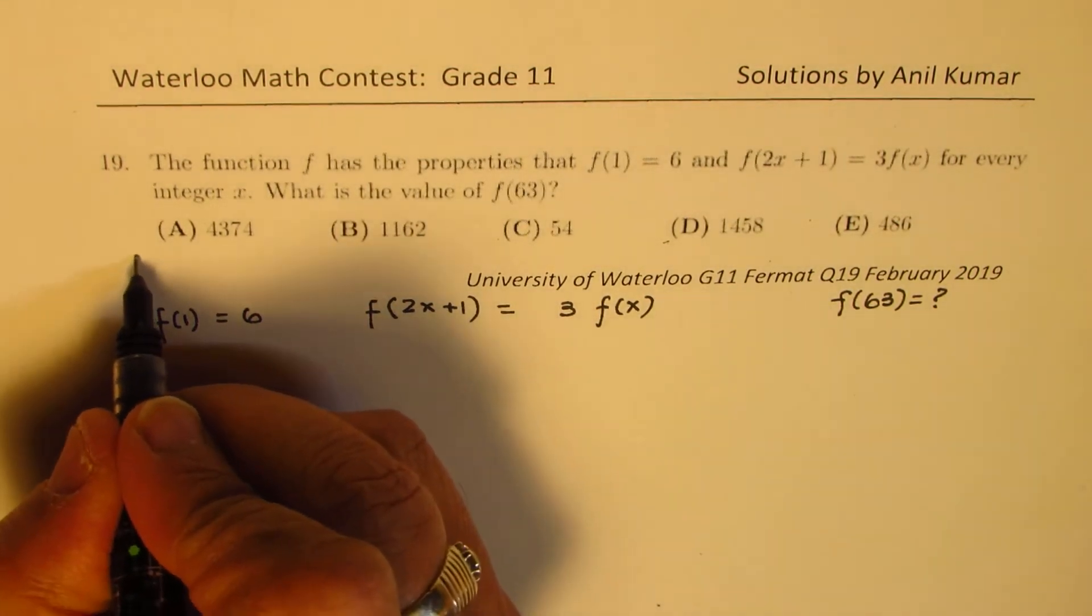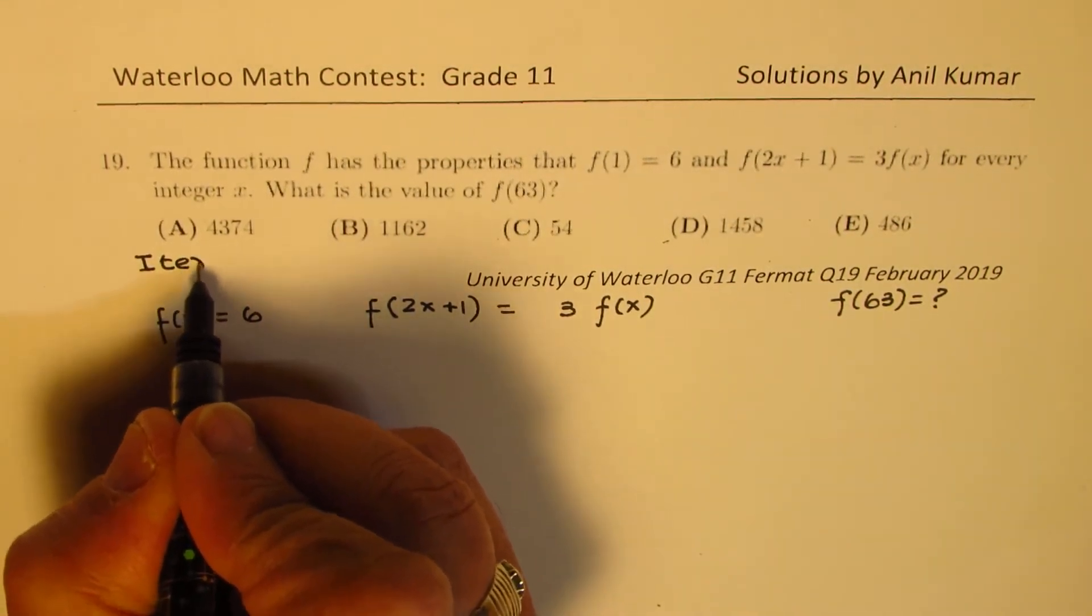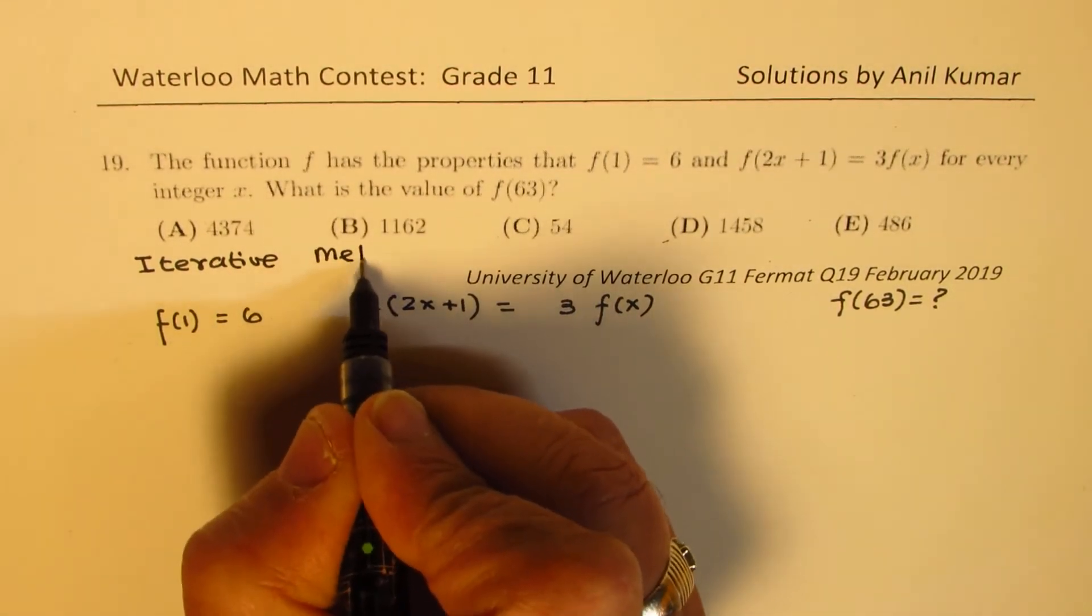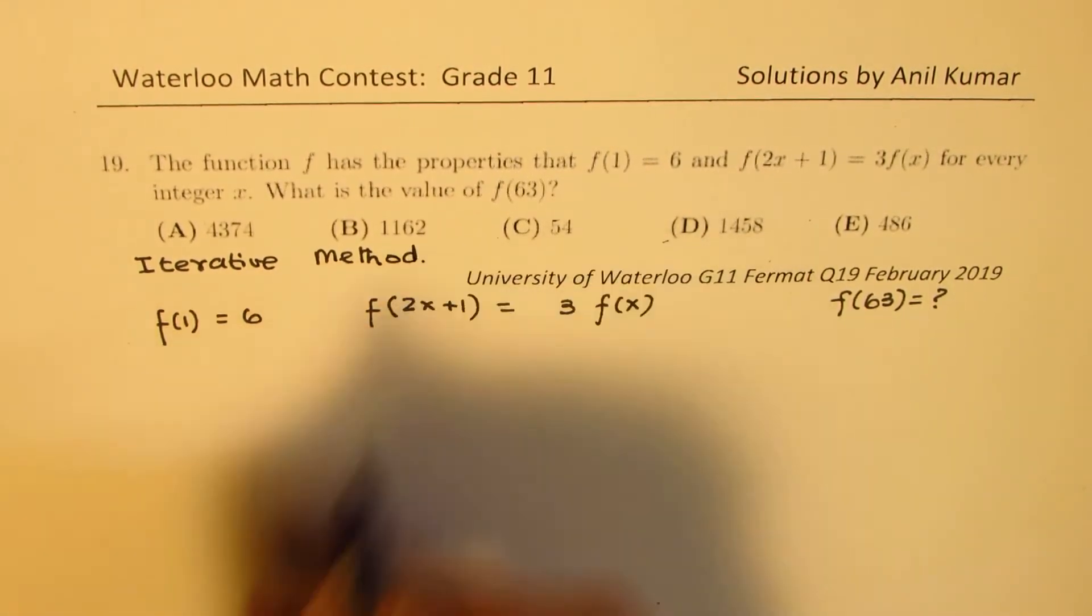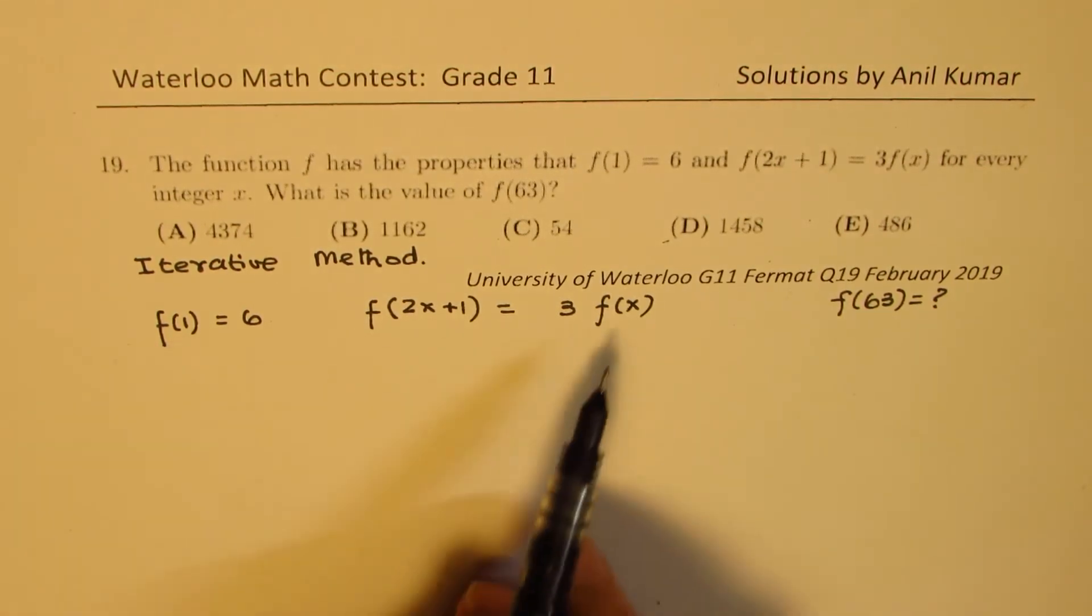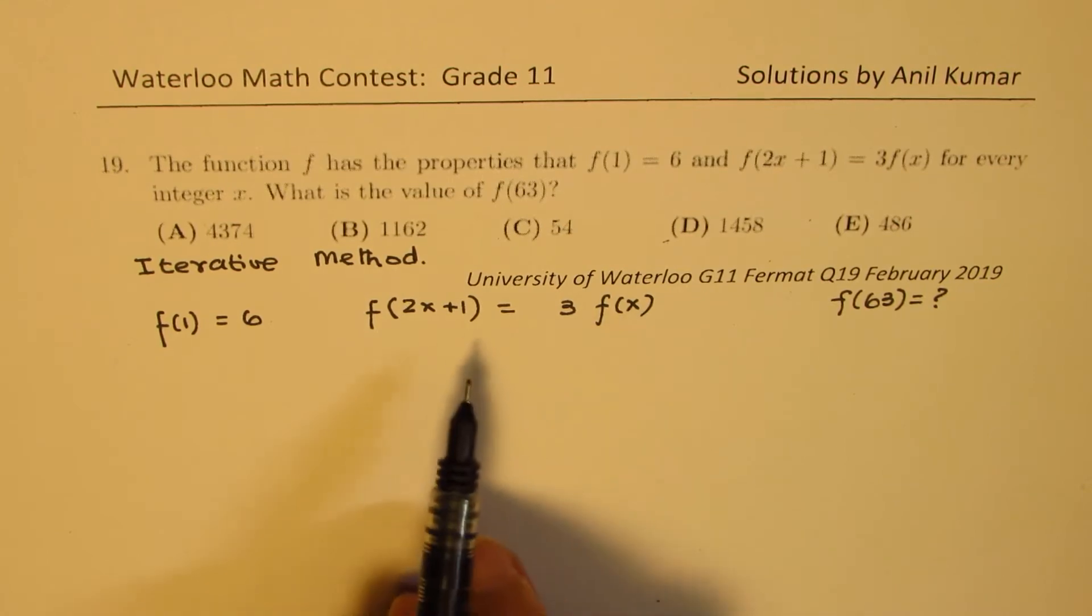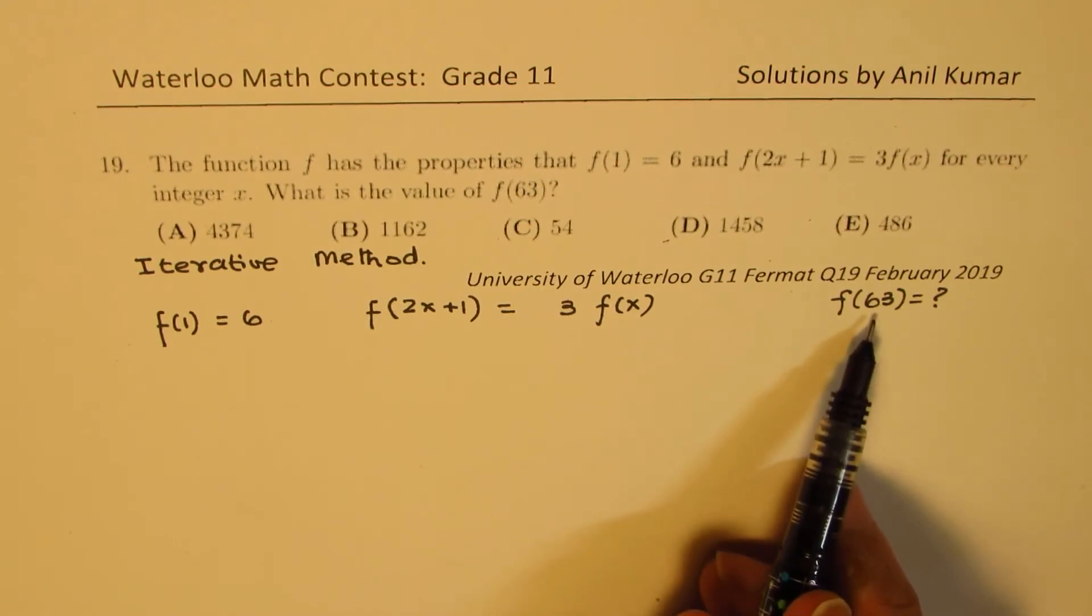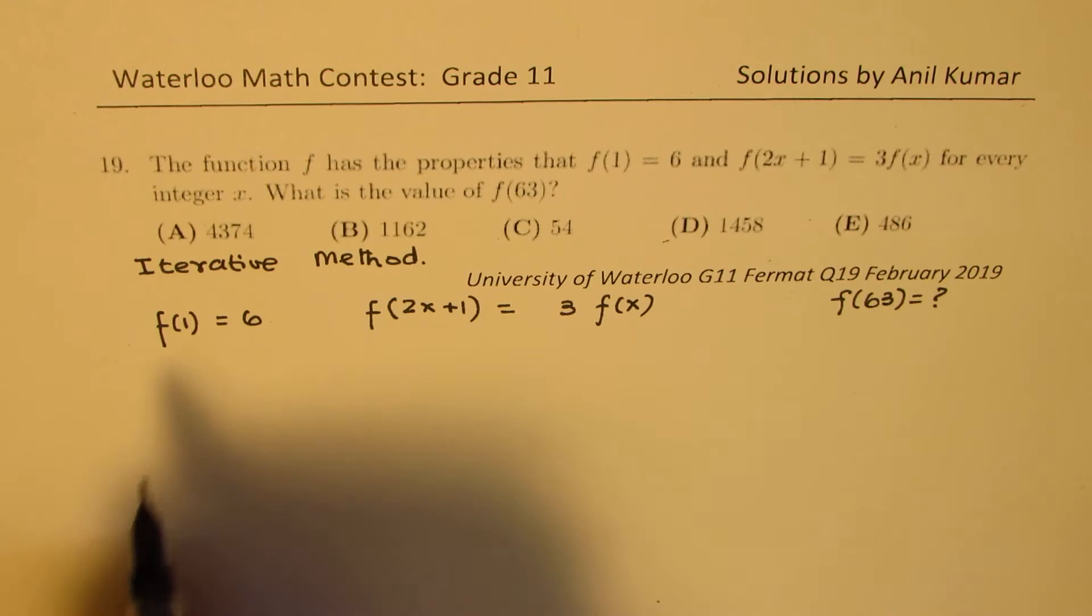We want to find f(63), so we'll follow an iterative method to solve this question. When we are given f(1), that means 3 times f(1) is known to us. We can place different values of x to find the series and then get to f(63). That's a very systematic way of doing it.